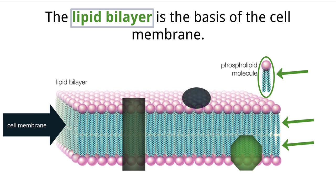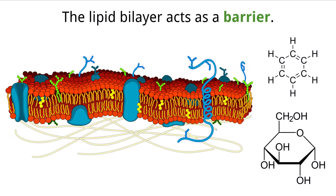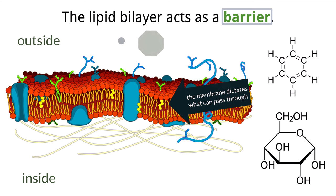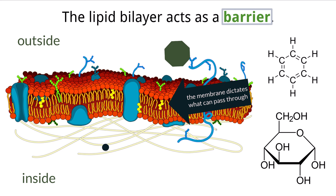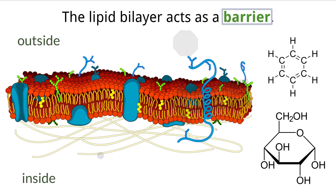Let's break down the details of the cell membrane and its many functions. As an obvious starting point, the cell membrane acts as a barrier. It is the structure that separates the inside of the cell from the outside and has the ability to determine and control what substances are able to move in and out. We call this concept of substances being able to move across the cell membrane with different amounts of ease: permeability.